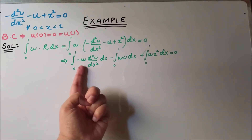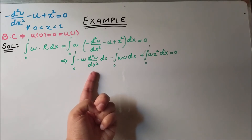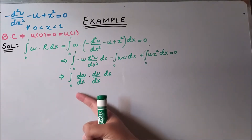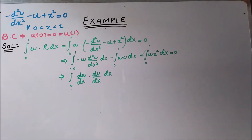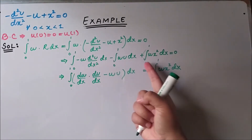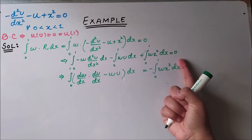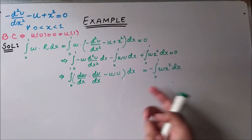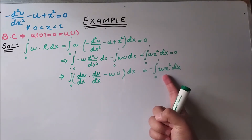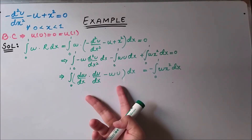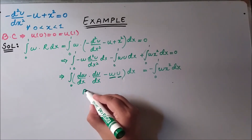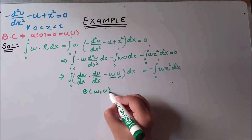We identify the first and second functions for integration by parts, and after performing integration by parts we obtain the result. Taking one term to the other side of the equation, on one side we have both the weight function and the displacement function — this type of term is known as the bilinear function, represented by B(w, u).